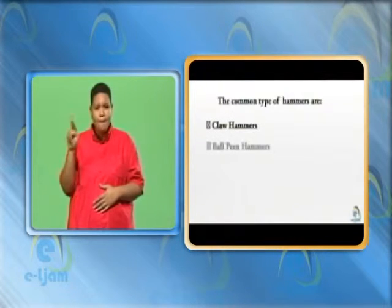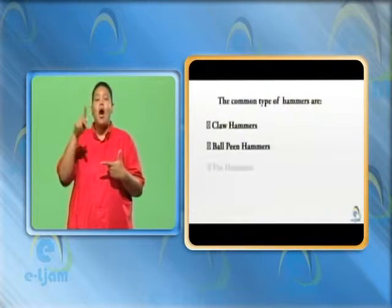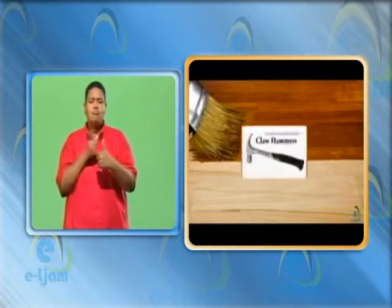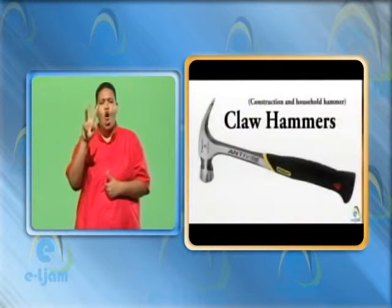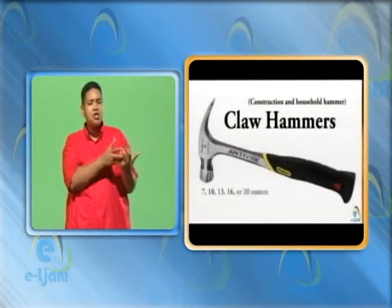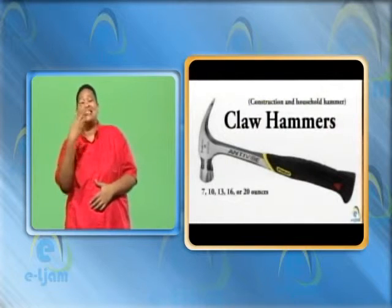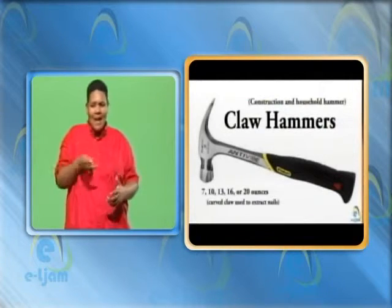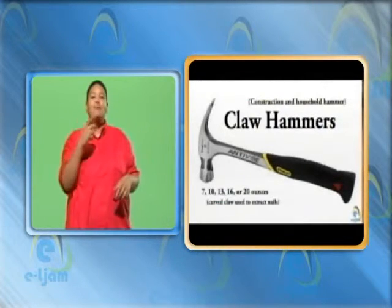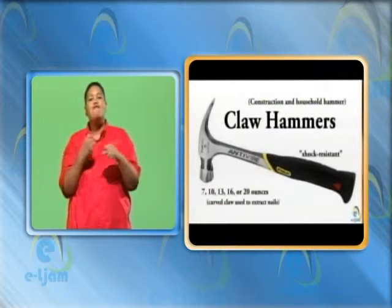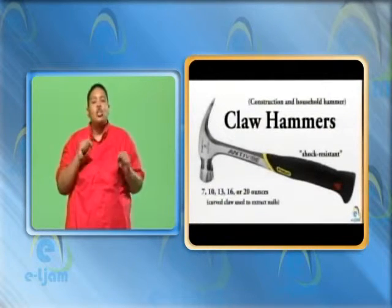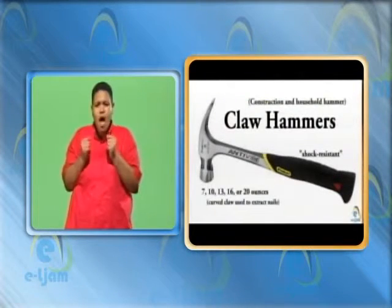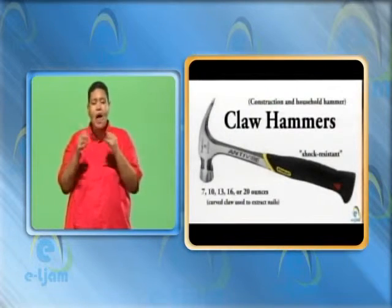Common types of hammers are: 1. Claw hammer, 2. Ball-peen hammers, 3. Pin hammers, and 4. Sledge hammers. Claw hammer: construction and household hammers are usually claw hammers, with heads usually weighing 7, 10, 13, 16, or 20 ounces. This hammer usually has a curved claw, which is used to extract nails. A good quality traditional claw hammer has a handle made of hickory, selected for its great shock-resistant properties. The head should be fixed firmly to the shaft with hardwood and iron wedges, and well-balanced for driving nails straight in the wood.